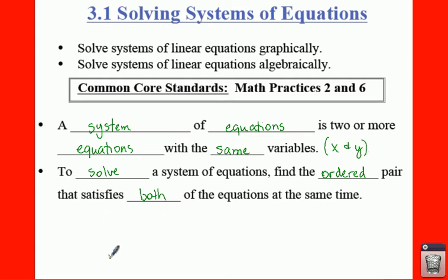And then in order to solve the system of equations, you're trying to find an ordered pair that satisfies both equations at the same time. So if you have two equations, say X plus Y equals 5 and 2X minus Y equals 4, you're trying to find an X and a Y that will work for the first equation and for the second equation. You're looking for two numbers that if you plug into both equations will work.